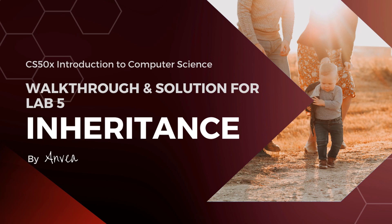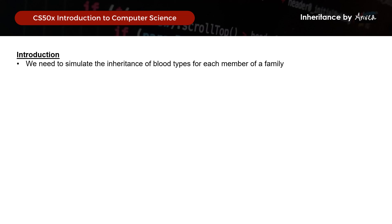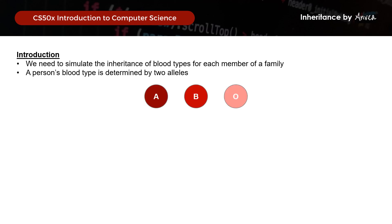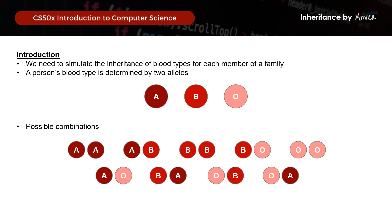So in this problem set, what we want to do is to simulate the inheritance of blood types for each member of the family. Each person's blood type is determined by two alleles, and there are three possible alleles: A, B, and O, of which each person has two, which could be of the same or different type. So there are actually nine possible blood type combinations that anyone could have.